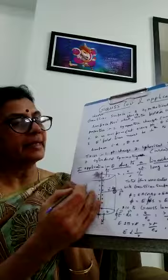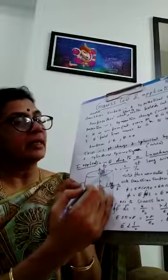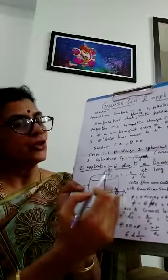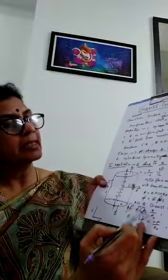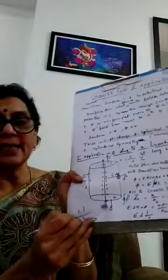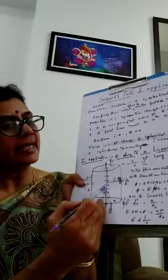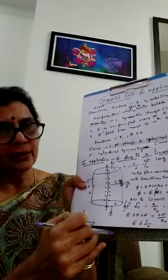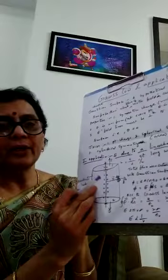For the first surface (top): the electric field is radially outward and the area vector is upward, so the angle between E and the normal is 90 degrees. Therefore, flux through the first surface is 0. For the second surface (bottom): the normal is downward and the electric field is radially outward, so again the angle between E and the normal is 90 degrees, and flux through the second surface is also 0. So only the third surface — the curved surface — remains.